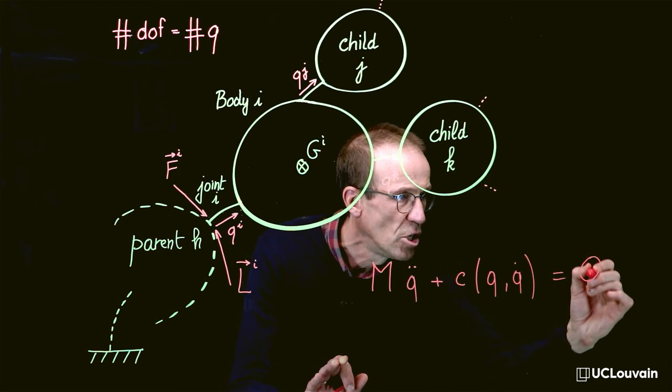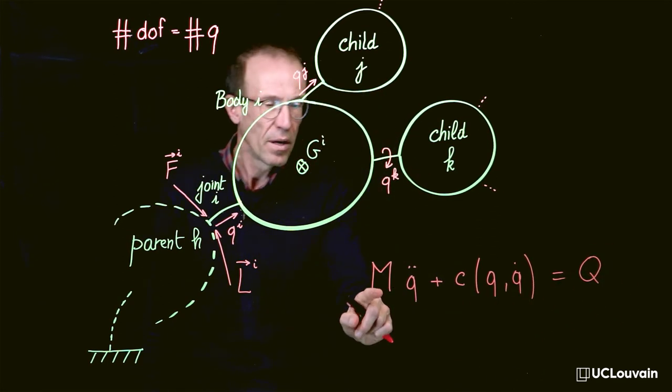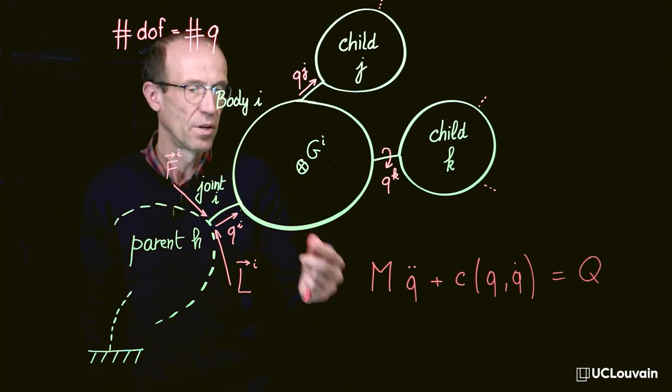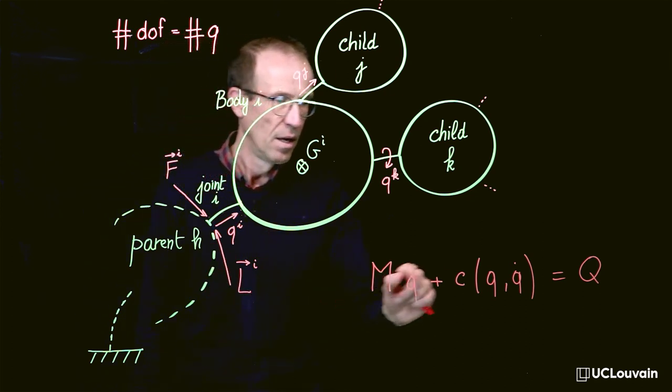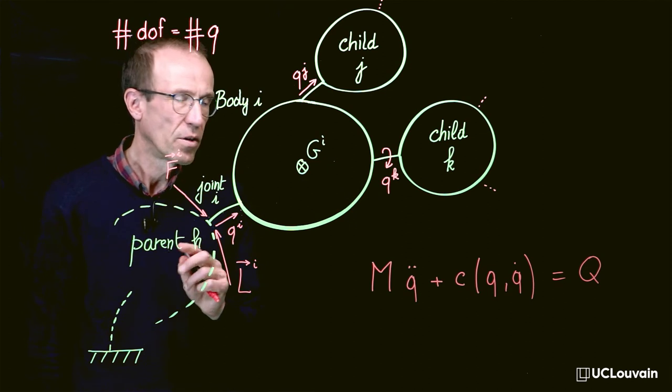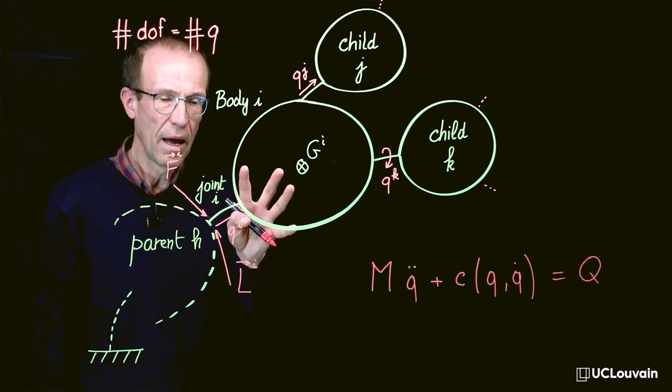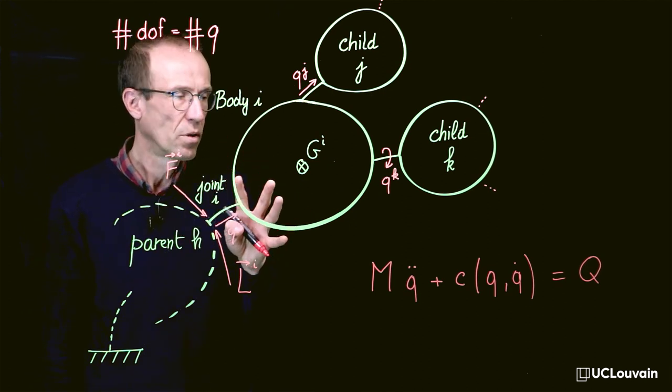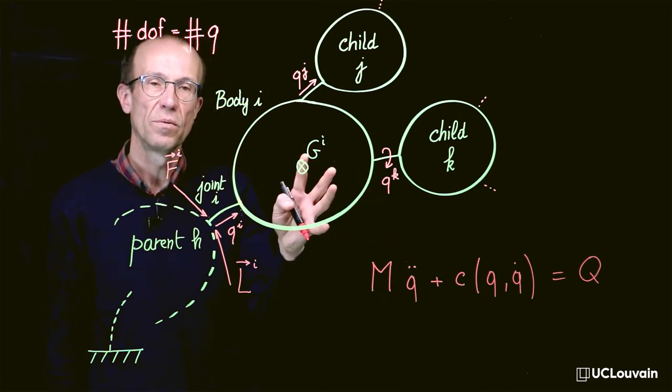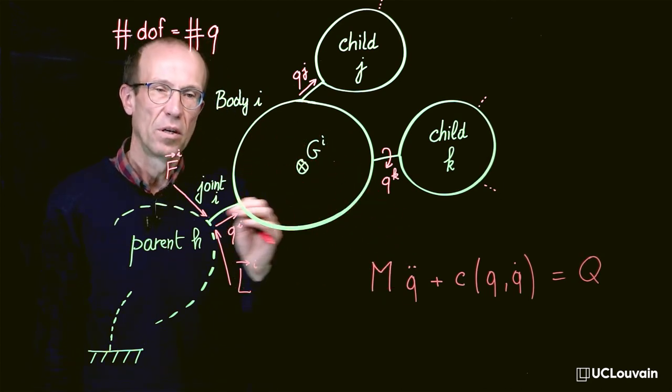In which M stands for the mass matrix of the system, c gathers all the external forces and torques, gyroscopic terms, centripetal terms, and Coriolis terms.